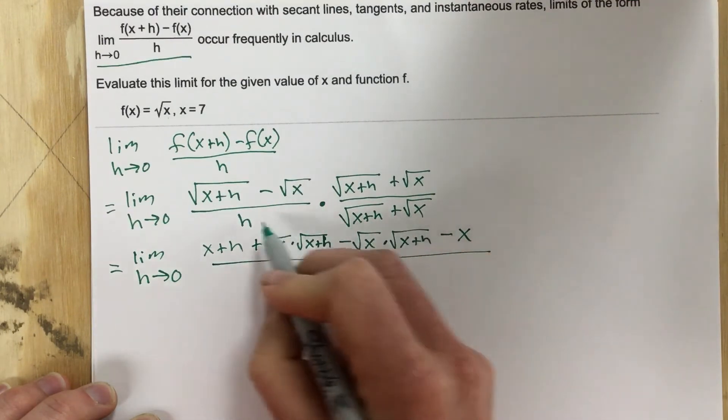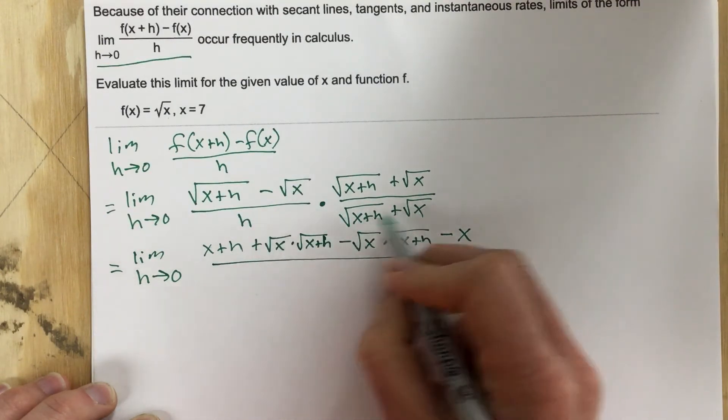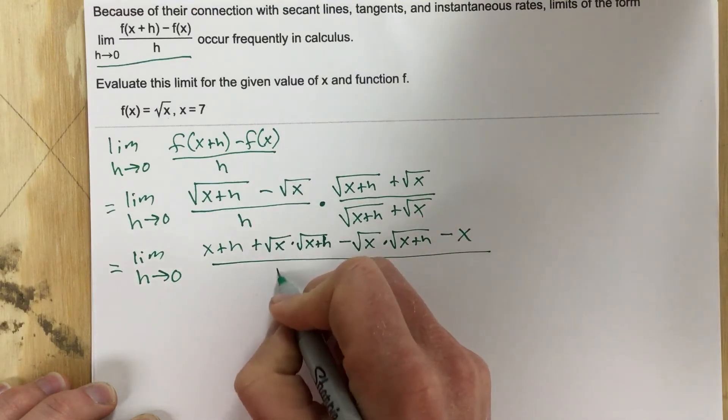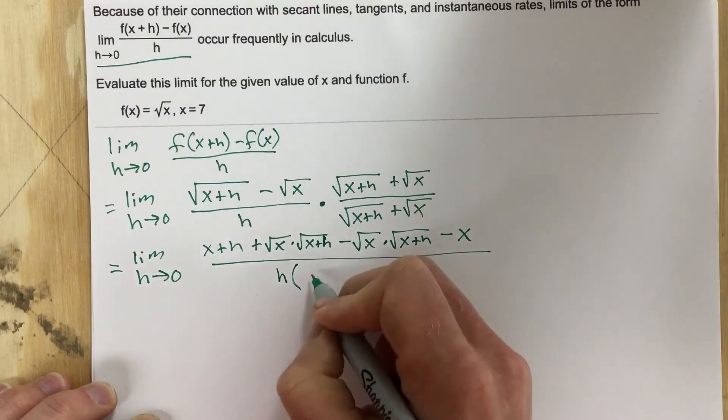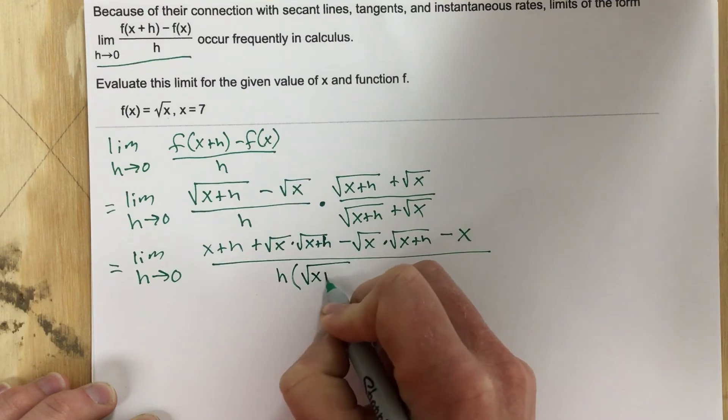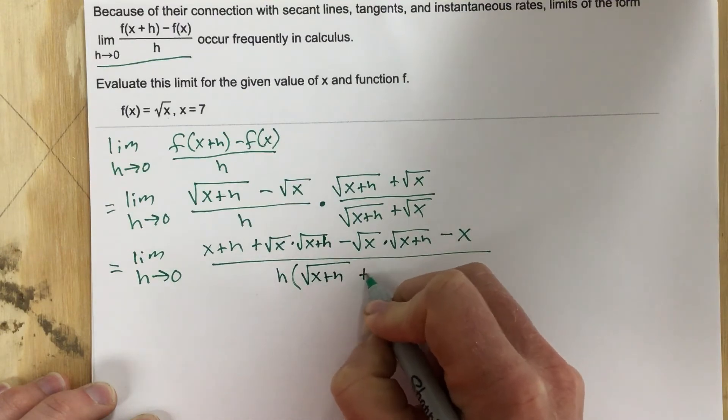Now, I don't want to distribute this h to each of these terms because I'm trying to cancel it. So I'm going to leave it outside with root x plus h, and then plus root x on the inside.